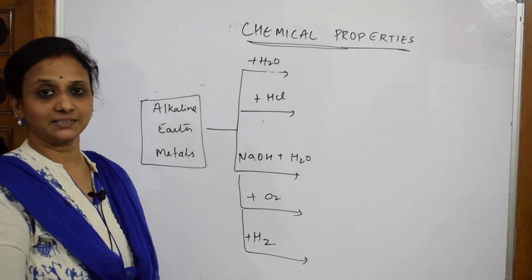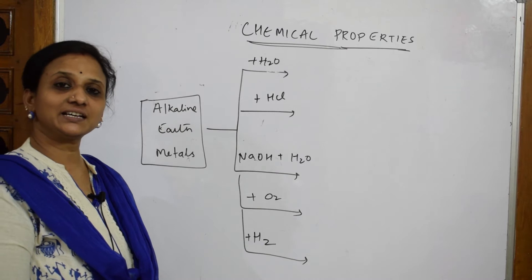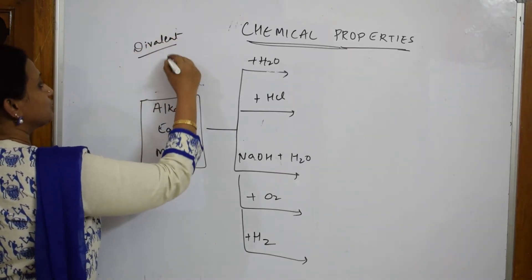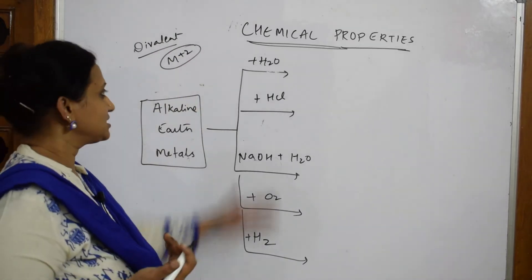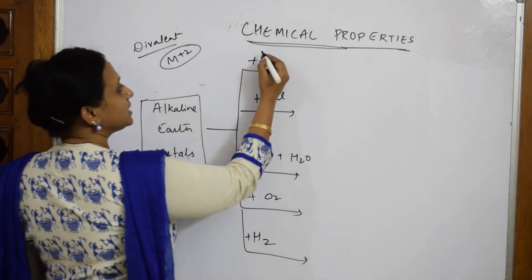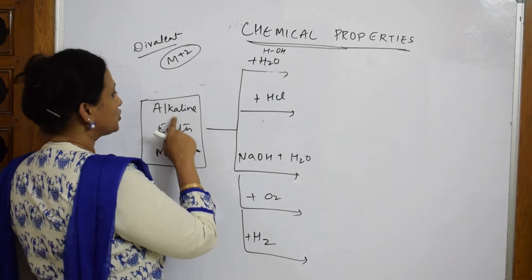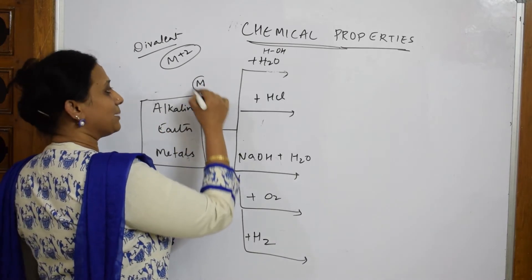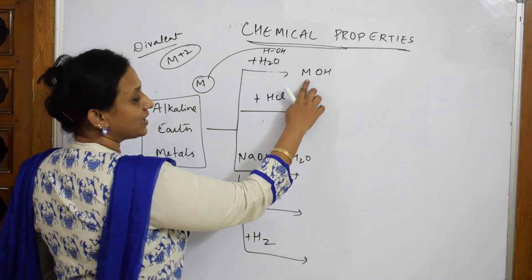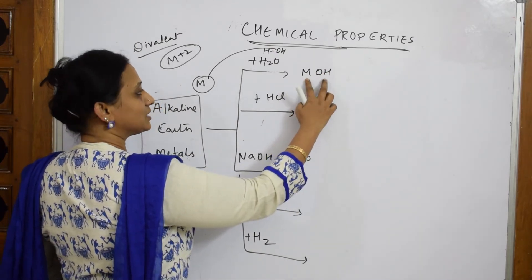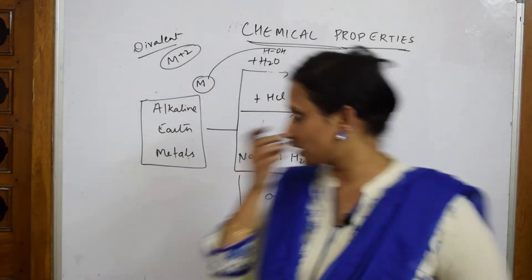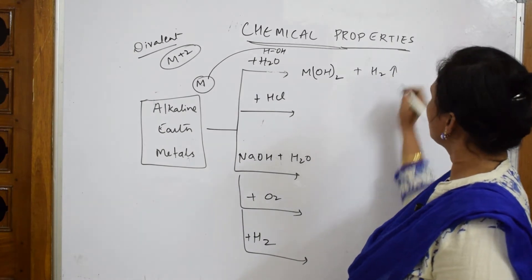Let's see the chemical properties of alkaline earth metals. Alkaline earth metals are divalent cations — the charge would be M²⁺, remember this. When alkaline earth metals react with water (HOH), the alkaline earth metal M combines with OH. The valency of metal is +2 and OH is minus one, so it becomes M(OH)₂, and the leftover hydrogen gas is evolved out.